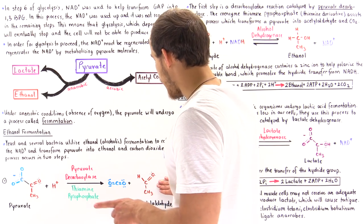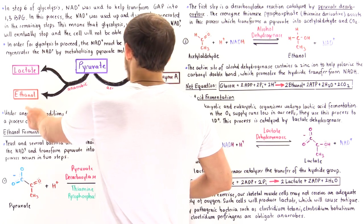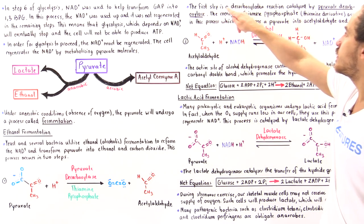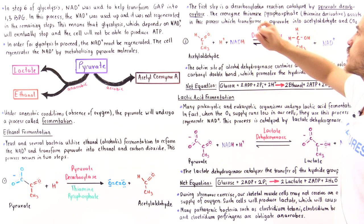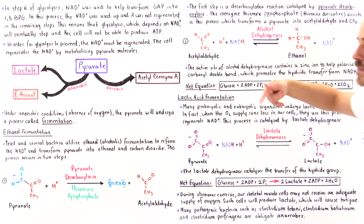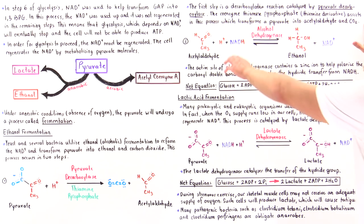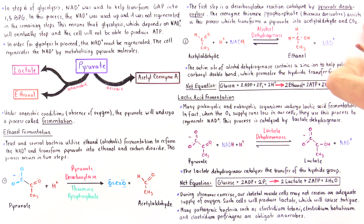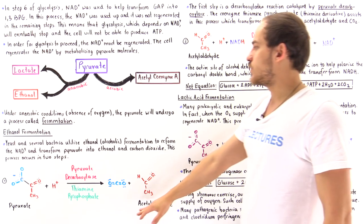That is the first step. In the second step, we actually produce ethanol. To recap: step 1 is the decarboxylation reaction catalyzed by pyruvate decarboxylase, with the coenzyme thiamine pyrophosphate — a vitamin B1 derivative — assisting to transform pyruvate into acetaldehyde while releasing CO2.